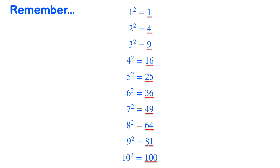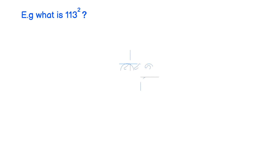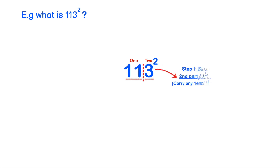So let's take a look at our first example. What is 113 squared? The way we do this is we take 113 and split it up into two sections — section 1 and section 2. This is exactly the same as when we were squaring two-digit numbers, where we would split the number up into tens and units. In this case, section 1 consists of hundreds and tens, and section 2 consists of units. We square the second part, or the units digit. In this case we have 3.